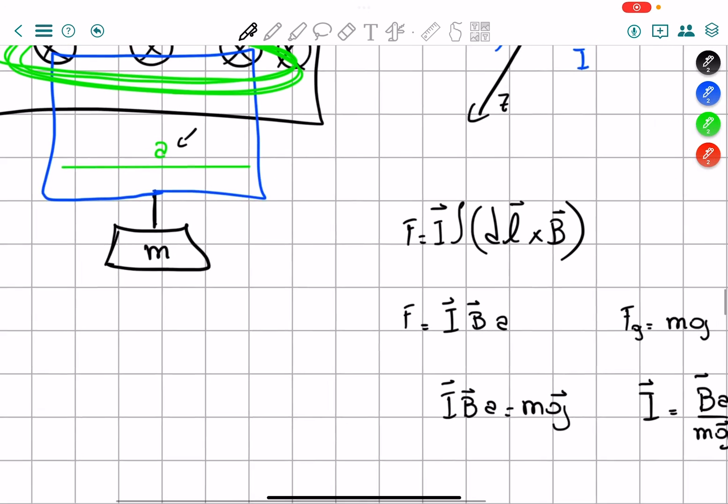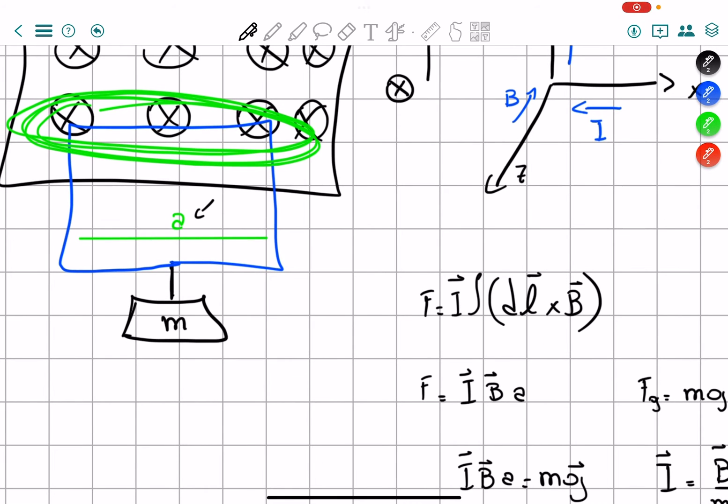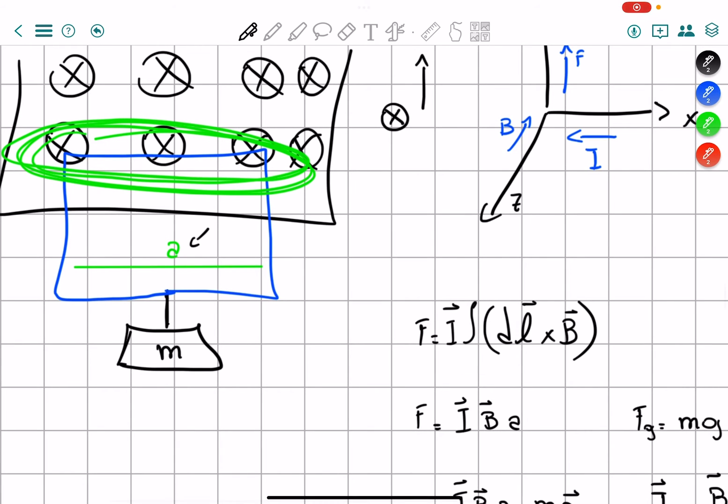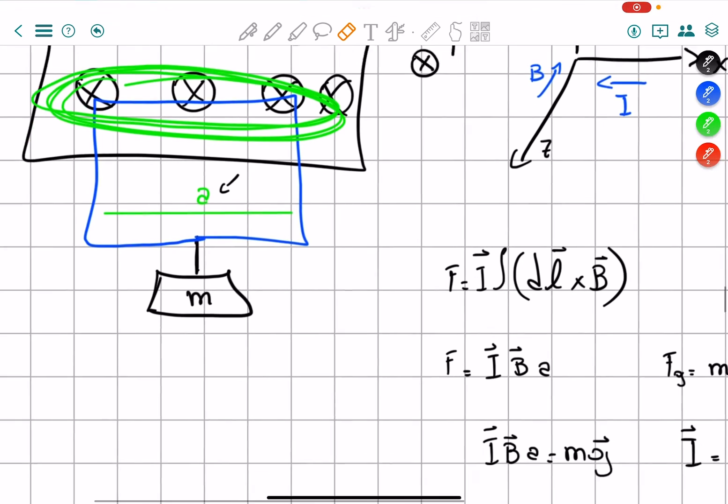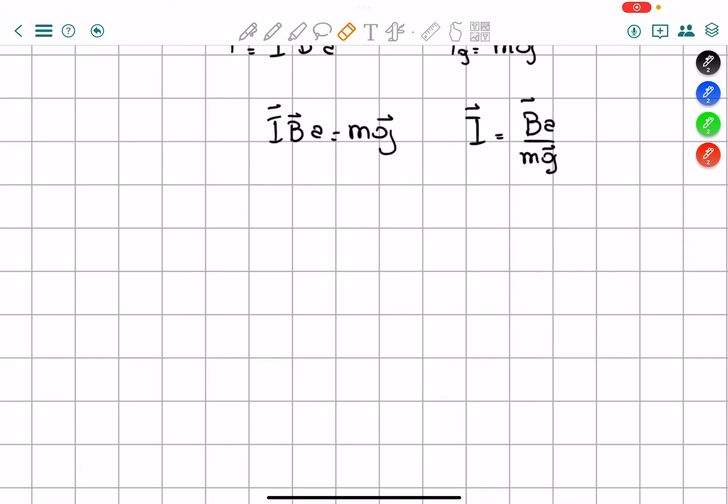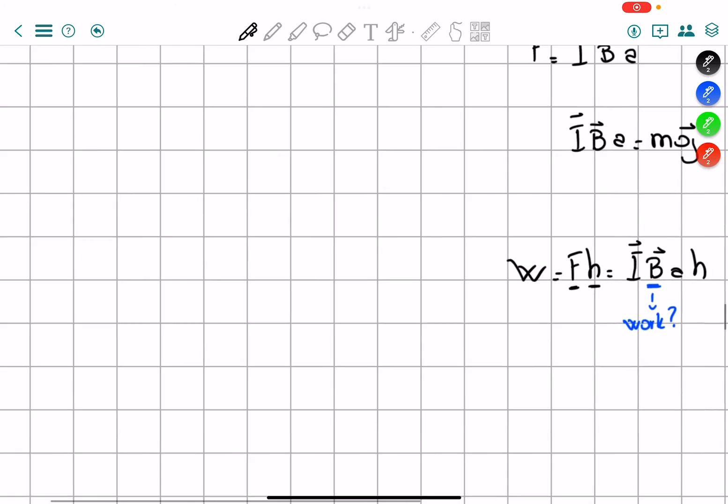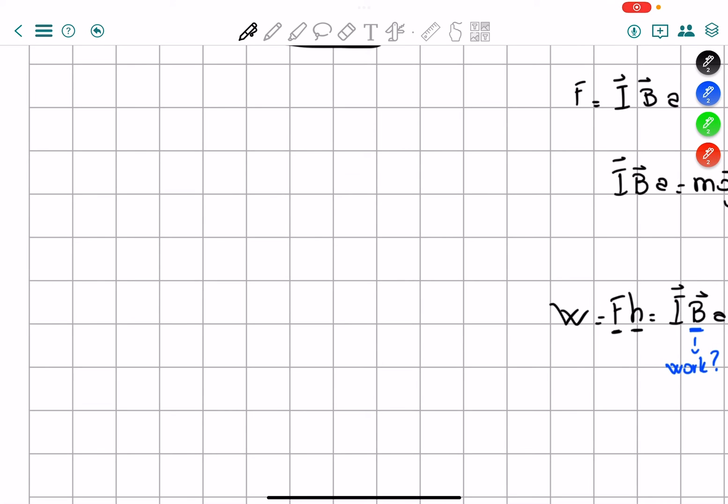Anyway one other thing that he starts talking about is what if we wanted to actually move the mass upwards, so not only we don't let it fall down but we want to move it upwards. Well then we have to just multiply the force that we're doing times the height that we're moving it, so it's going to be equals to i b a times h. But as I said the magnetic force does not do any work and this of course goes to the work because it's a force over a distance, so how does it do work?